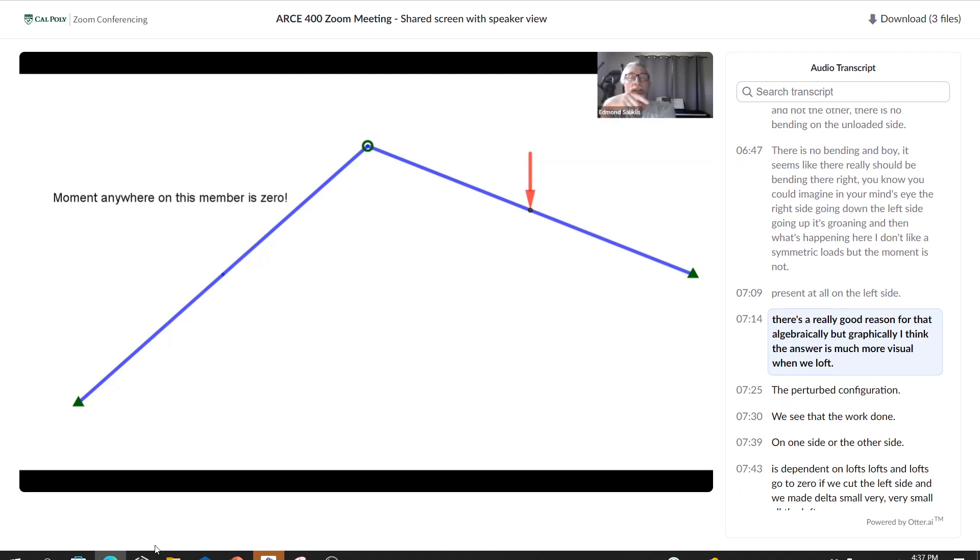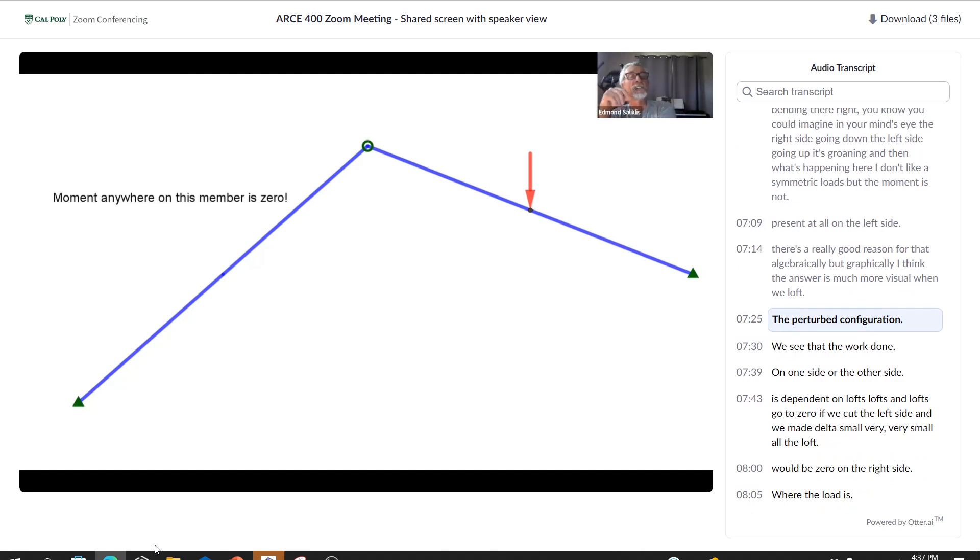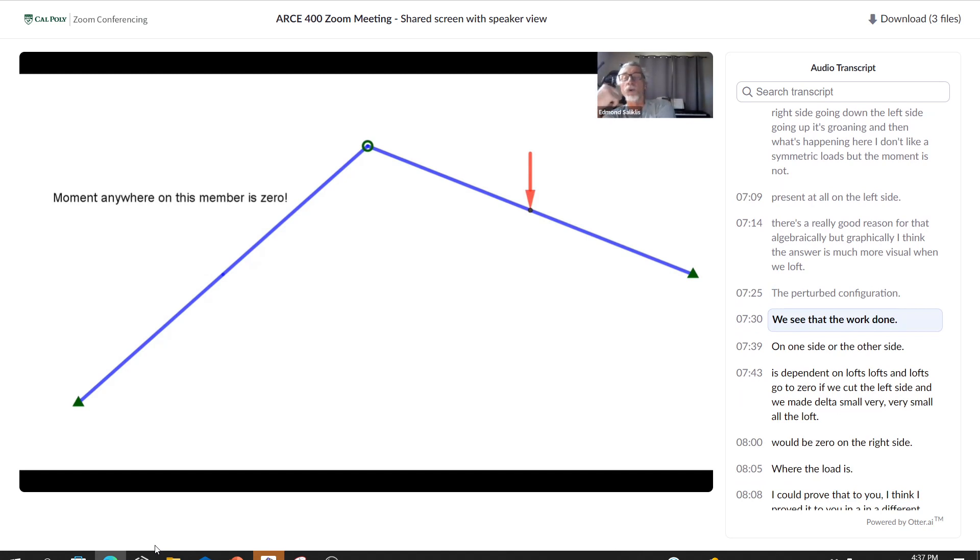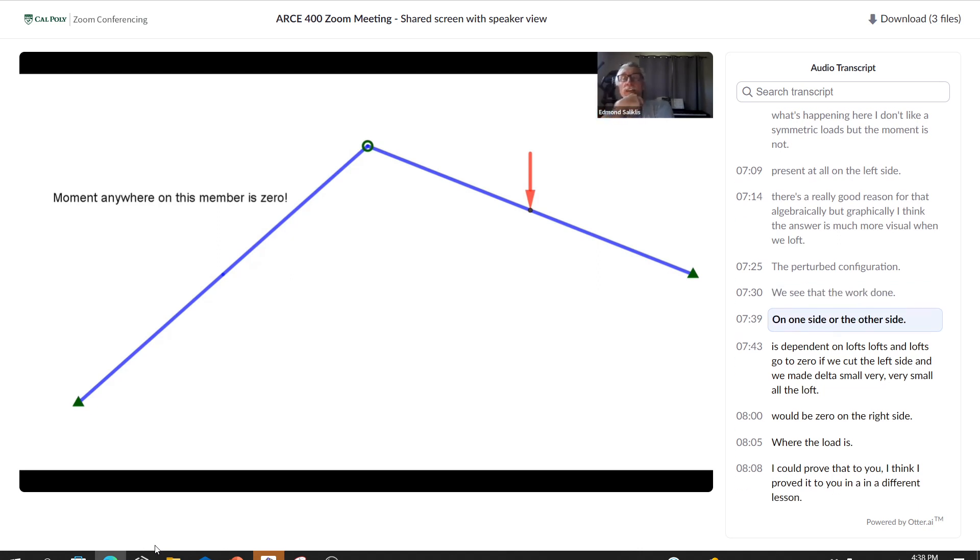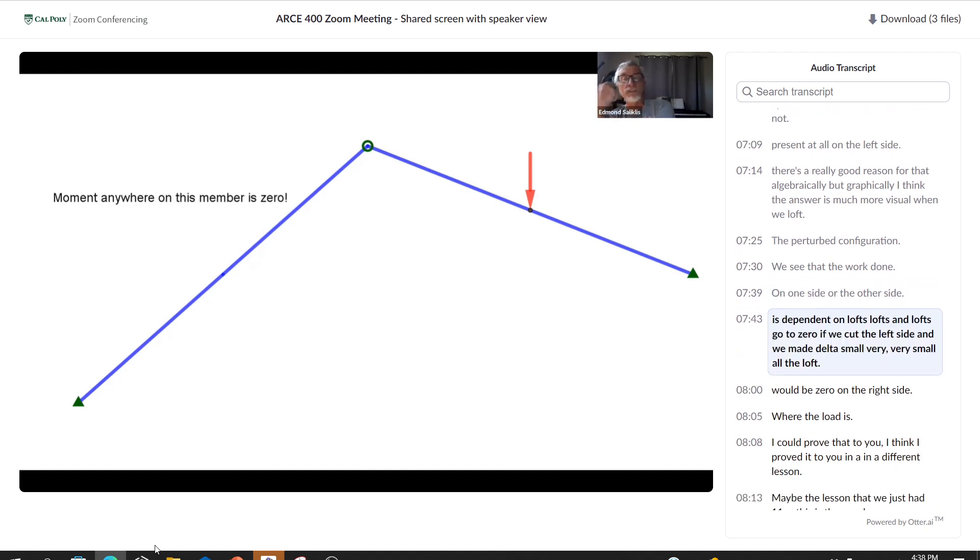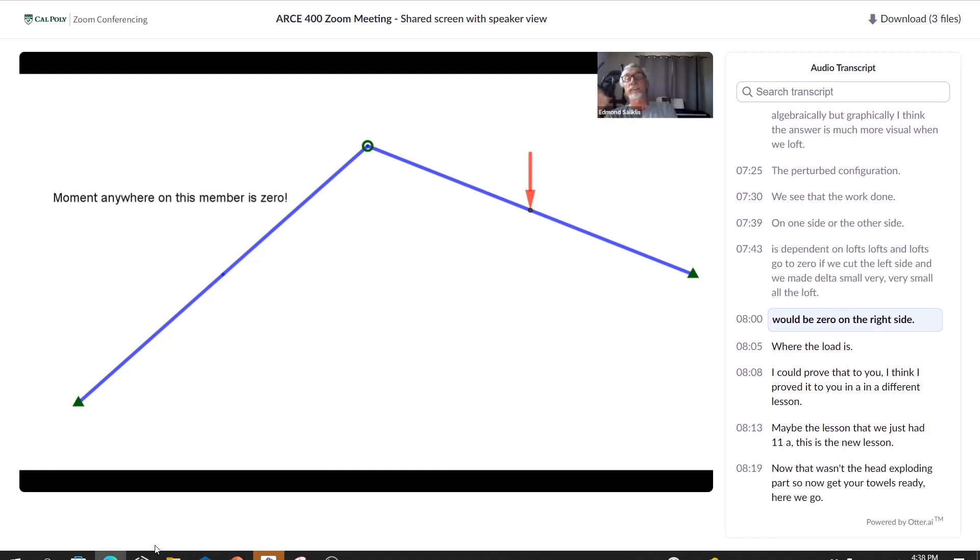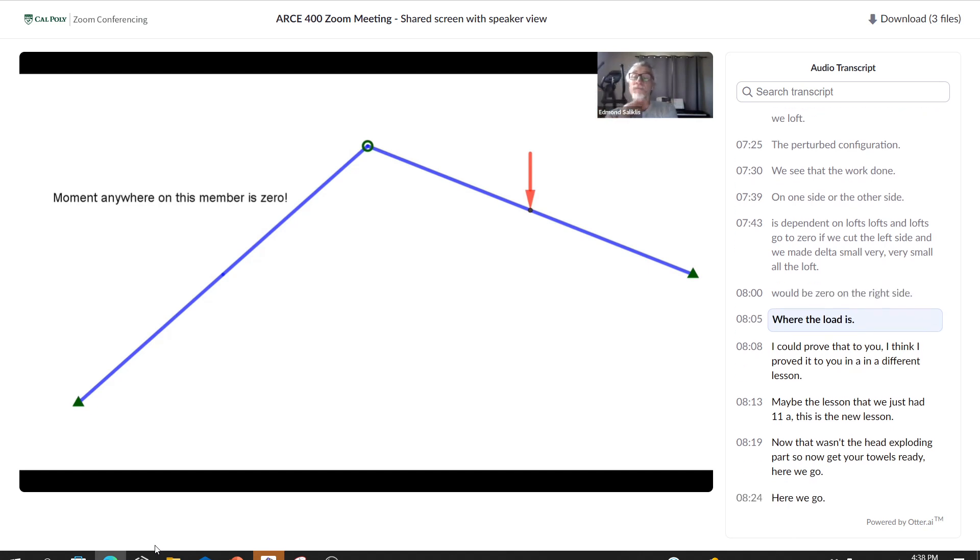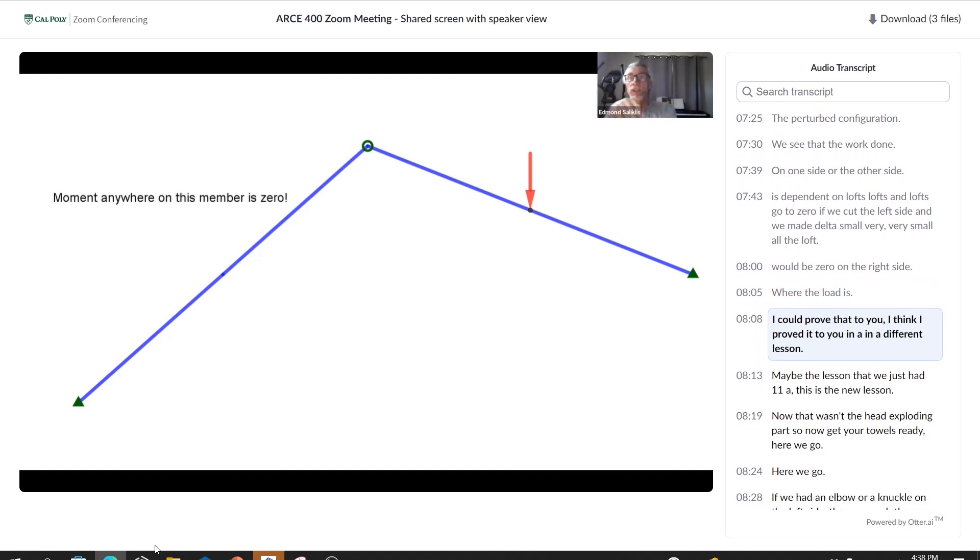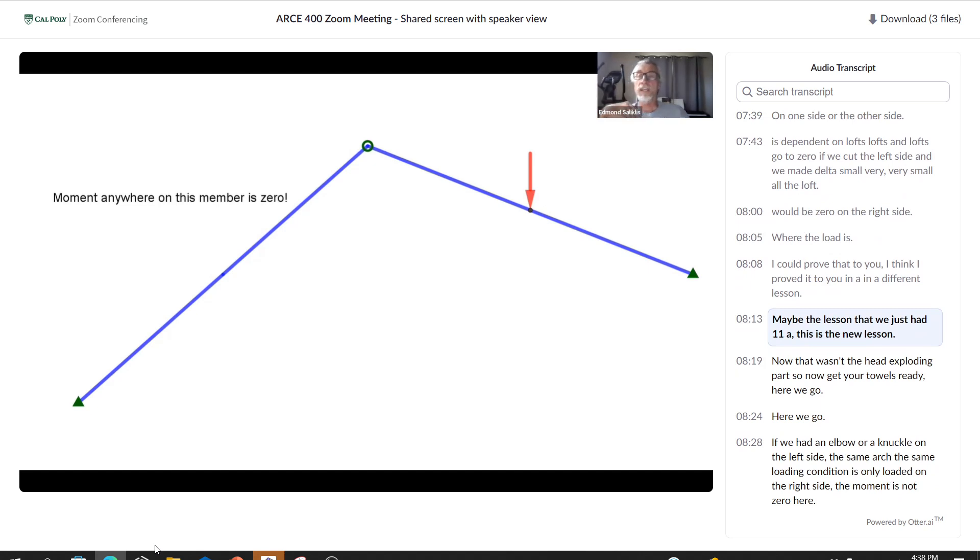There's a really good reason for that algebraically, but graphically I think the answer is much more visual. When we loft the perturbed configuration, we see that the work done on one side or the other side is dependent on those lofts and those lofts go to zero. If we cut the left side and we made delta small, very small, all the lofts would be zero on the right side where the load is.